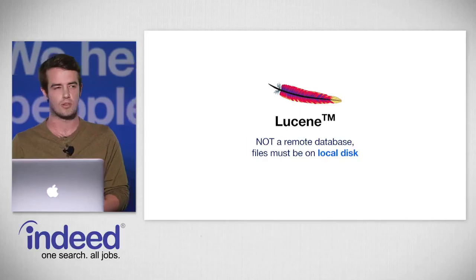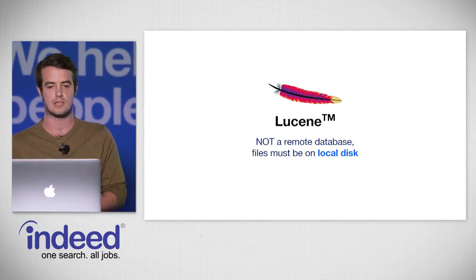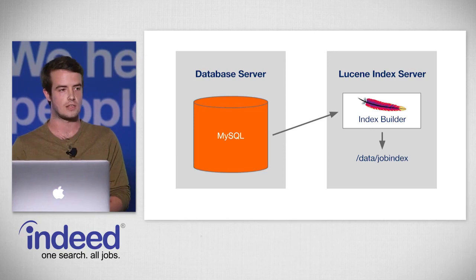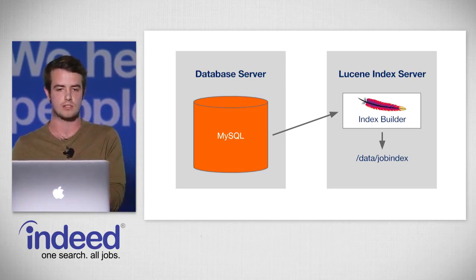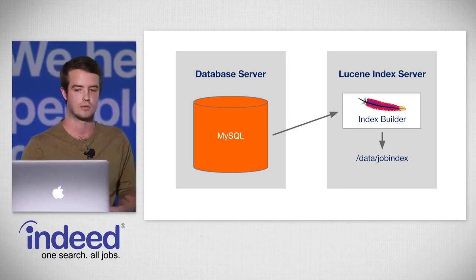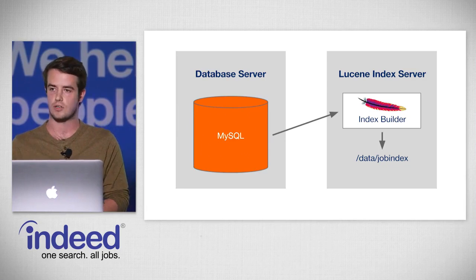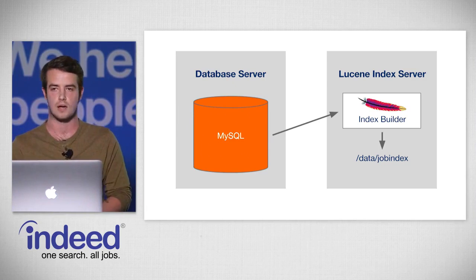Lucene is a high-performance, full-featured text search engine library, and it's really fast. One of the ways it's able to be fast is that it's not a remote database like MySQL — the files for Lucene must be stored on the local disk of the application server, or in our case, our job search engine. A typical way to build a Lucene index is to have a process reading from a data source like MySQL and writing out the Lucene index to the local file system. However, we knew we were going to need many servers to keep the site up and fast all the time.